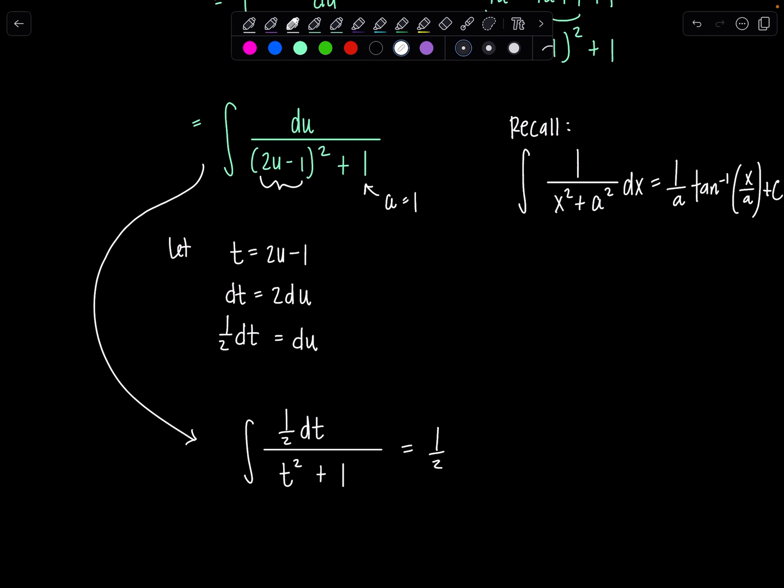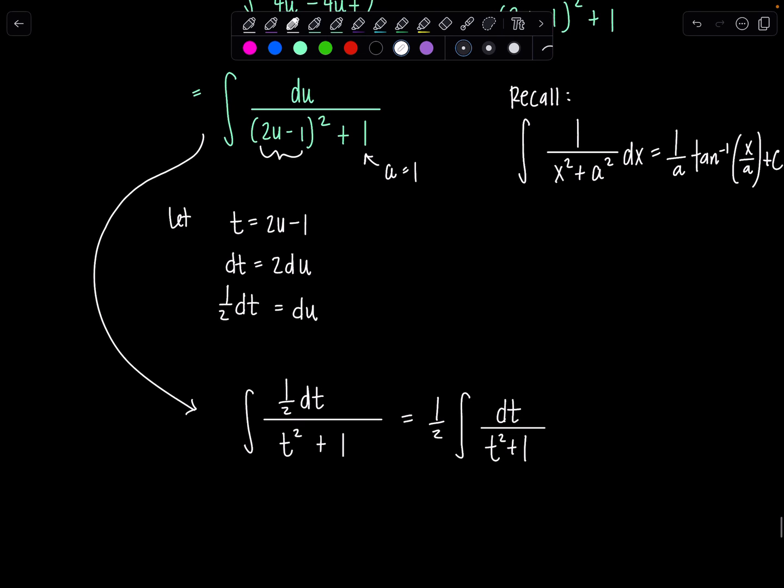Does that look more friendly? So you have 1 half integral dt over t squared plus 1. And then maybe now you're less scared. This is 1 half tan inverse of t plus c. So now's the time to put plus c. Then let's go back. That's 1 half tan inverse. And t was 2u minus 1. Now, normally, if I wasn't explaining this to anybody, I would have skipped all of this.